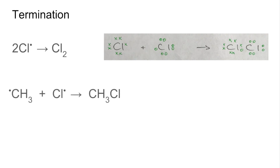A methyl radical and a chlorine radical can form chloromethane. So you'll notice that there are two ways to form the chloromethane, via termination, as you've just seen there, and also via propagation.